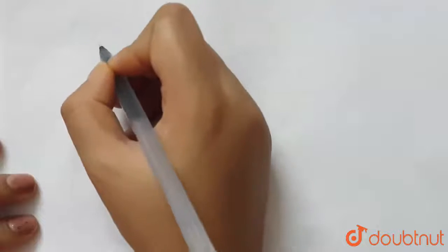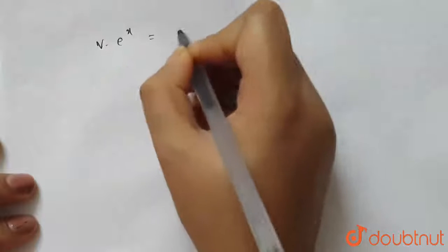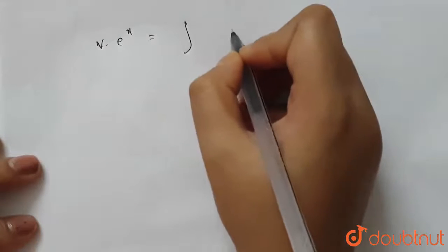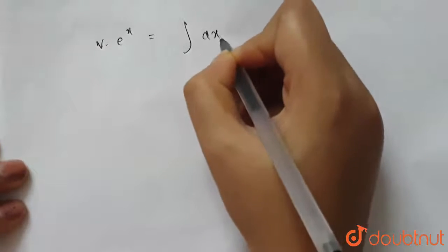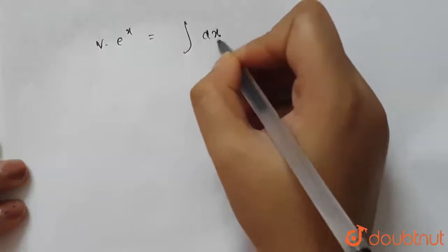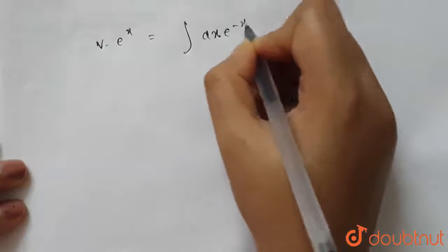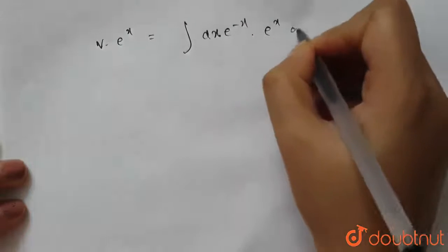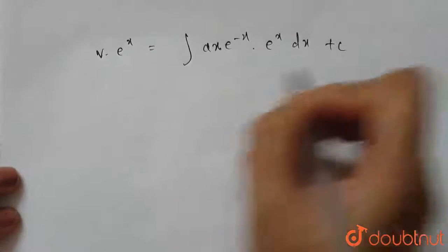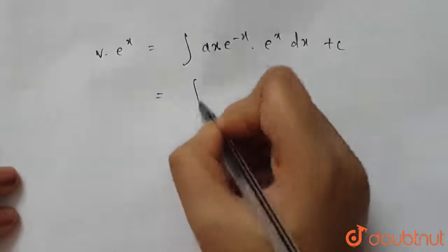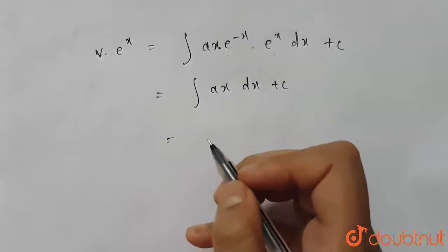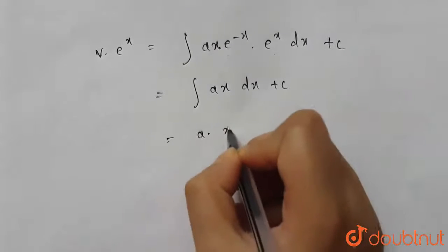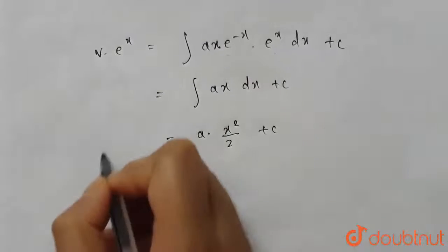The general solution is v·eˣ = ∫Q·(IF) dx + C. Here Q = ax·e^(−x) and IF = eˣ. So v·eˣ = ∫ax·e^(−x)·eˣ dx + C. The e^(−x) and eˣ cancel, giving ∫ax dx + C. Since a is a constant, we get a·x²/2 + C.